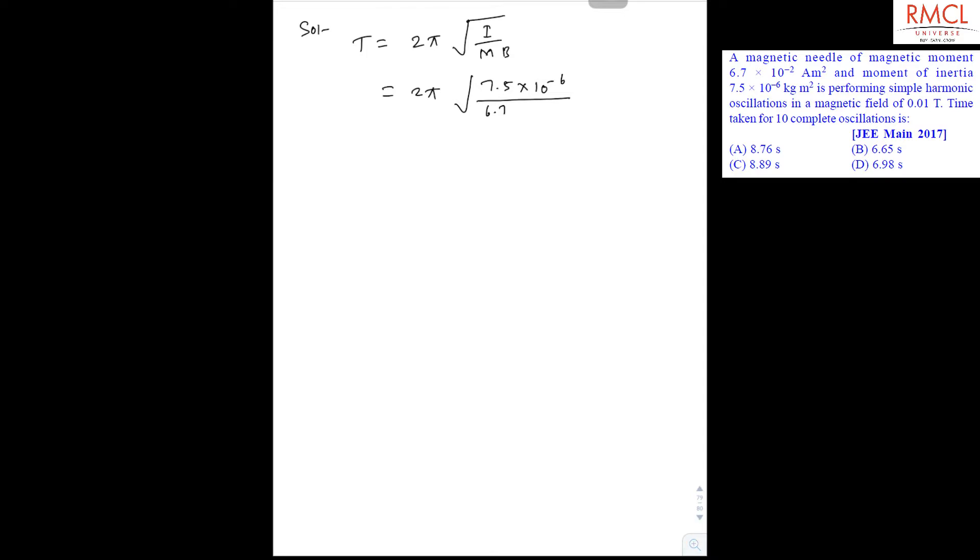6.7 × 10⁻² and magnetic field is 0.01 tesla. Now if we solve this it becomes 2π into under root 75 upon 67.